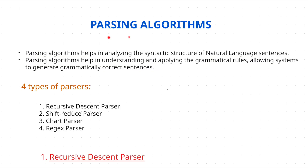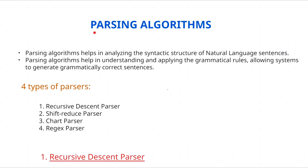So, what are parsing algorithms? Parsing is dividing a sentence into words and tagging it with parts of speech, to check whether the given sentence is following grammatical rules and to check its syntax — to determine whether it is a grammatically correct sentence. The first point is: parsing algorithms help in analyzing the syntactic structure of natural language sentences.